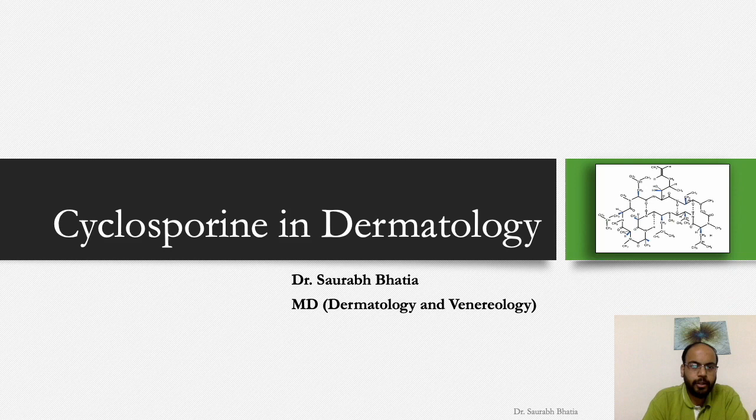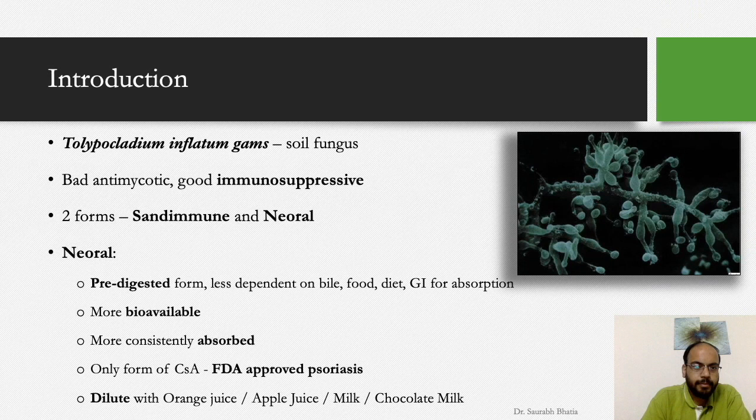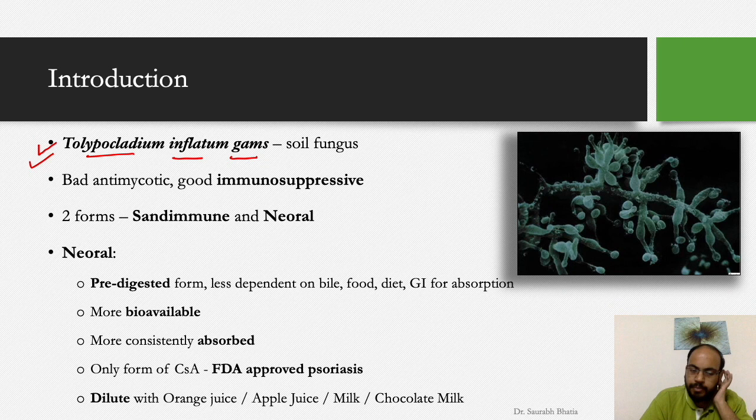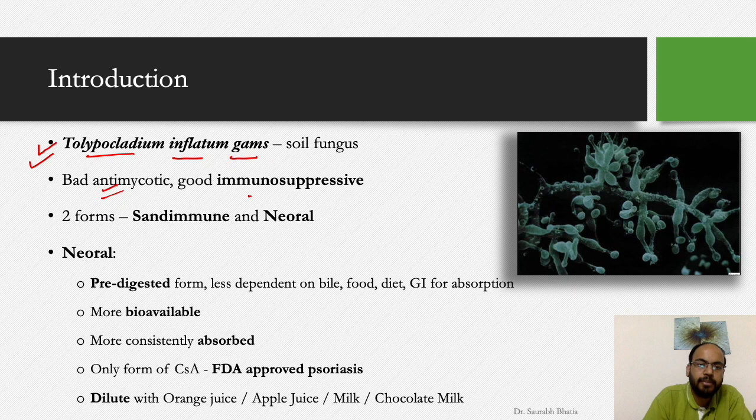Today we are going to learn about the use of cyclosporine in dermatology. Cyclosporine comes from the soil fungus Tolypocladium inflatum GAMS. Earlier, in the 1960s to 80s, people were searching for an anti-mycotic agent, and from this fungus they isolated a compound known as cyclosporine. It was a very bad anti-mycotic, but it had good immunosuppressive properties.